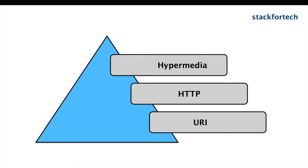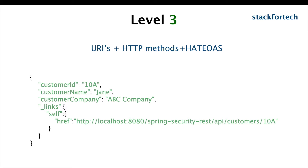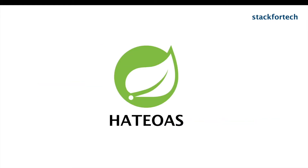There is a separate in-depth video on the Richardson Maturity Model — check it out via the link in the info button. To summarize, a Level 3 API is one which has different URIs per operation, appropriate HTTP verbs like GET, POST, DELETE, and PUT, and HATEOAS. The response will have a links section which is the hypermedia and the HATEOAS implementation.